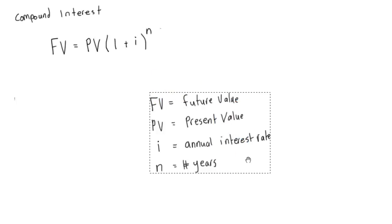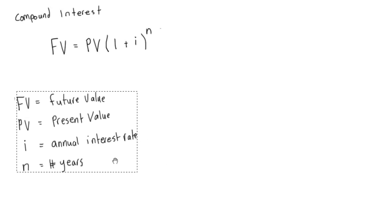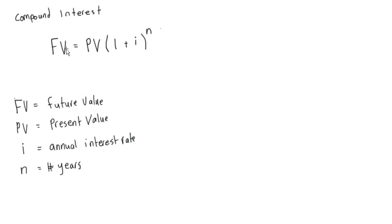So I have it here for us. I've already written it down to save you guys having to watch me write this. So we have future value, present value, annual interest rate, and a number of years.